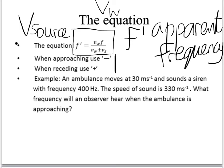An example using this equation. The ambulance moves at 30 metres per second, and the sound is a siren with frequency 400 hertz. The speed of sound is given as 330 metres per second. So what frequency will an observer hear when the ambulance is approaching? In this case, you need to use the equation above, but you use the minus sign on the bottom. So you'd write it out like this. Vf, sorry, Vw f over Vw minus the speed of the source, Vs. So we put those numbers in.